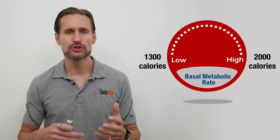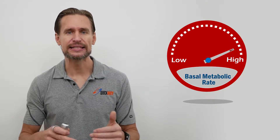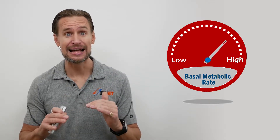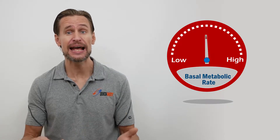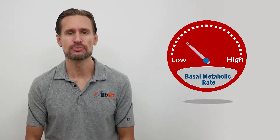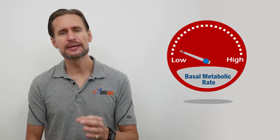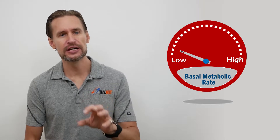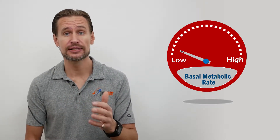After the age of about 20, basal metabolic rate declines — it gets less by about 1 to 2% per decade, mostly due to the loss of muscle mass. This is a major reason why it's easier to gain fat in our 30s, 40s, 50s and onwards than it is during our teens and early 20s.